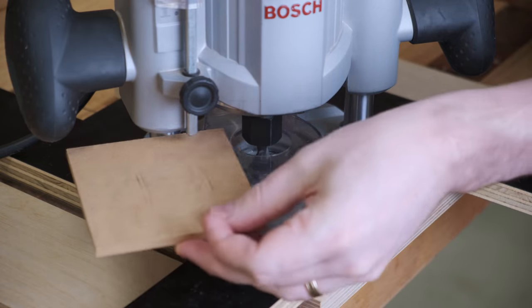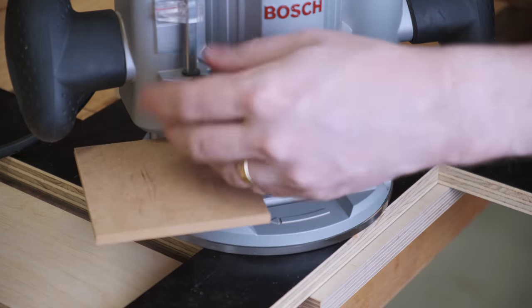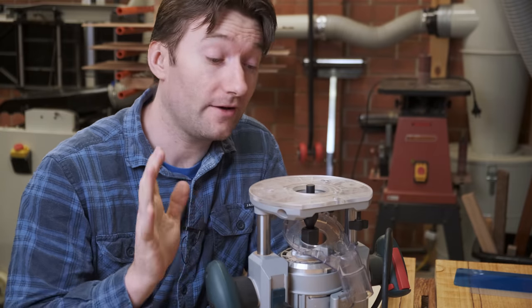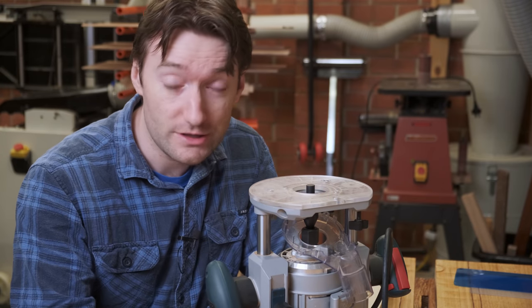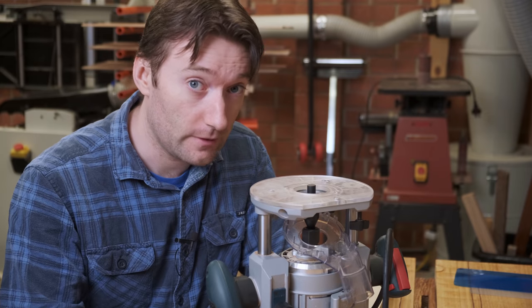The depth of cut is set by using the insert material itself, in this case 6mm plywood. If you're unfamiliar with how a guide bushing in a router works, here is a very quick primer.